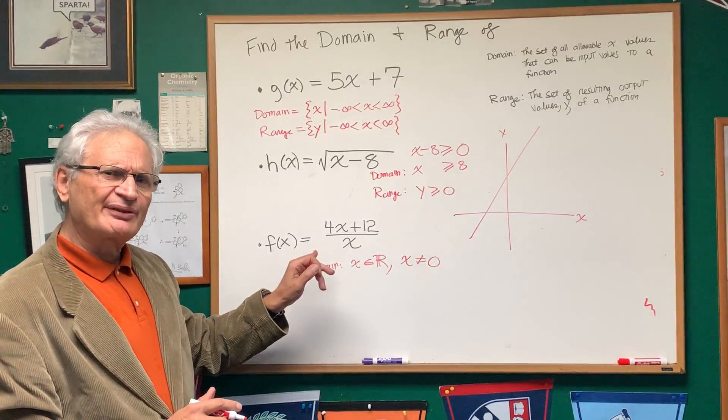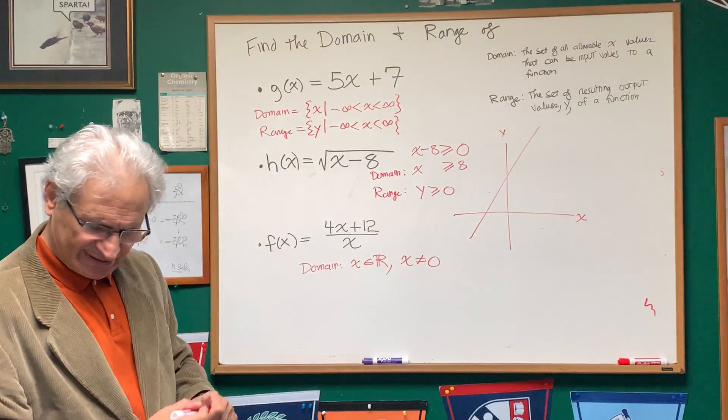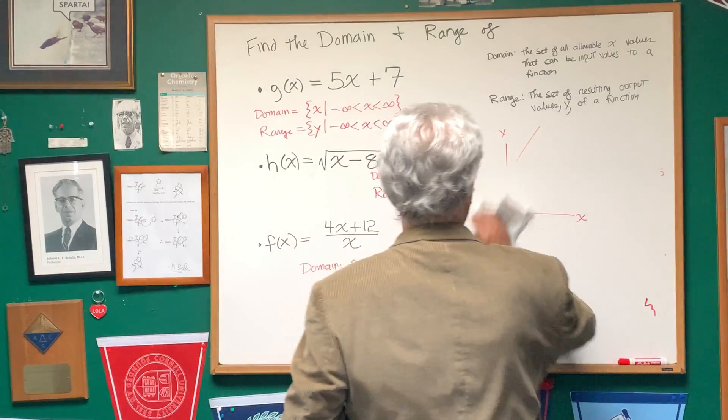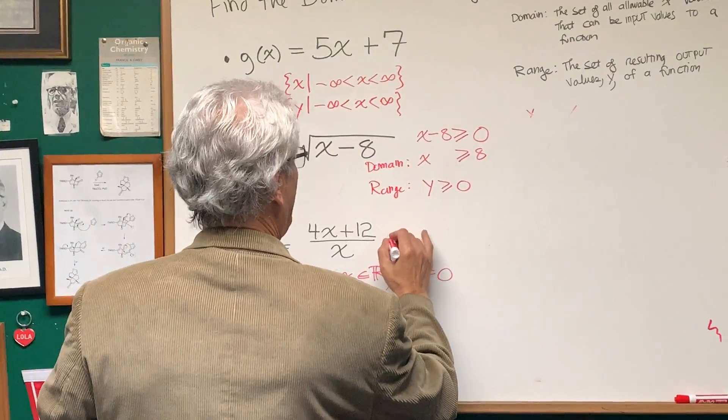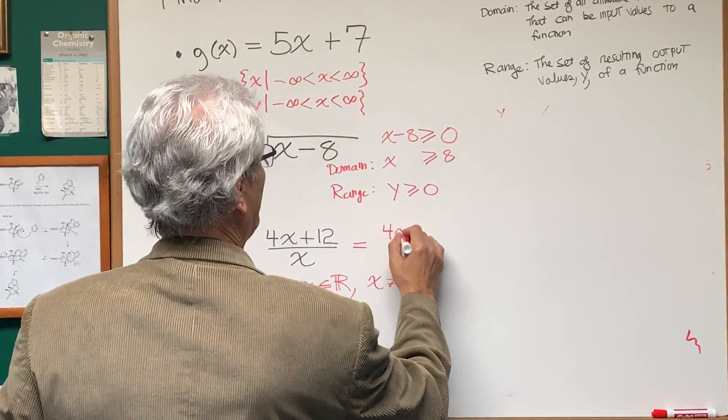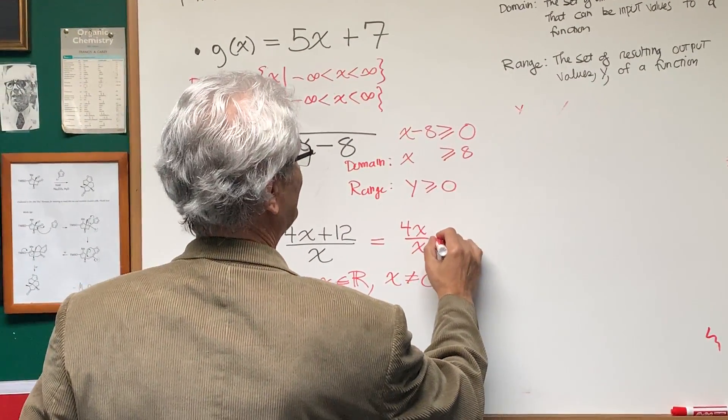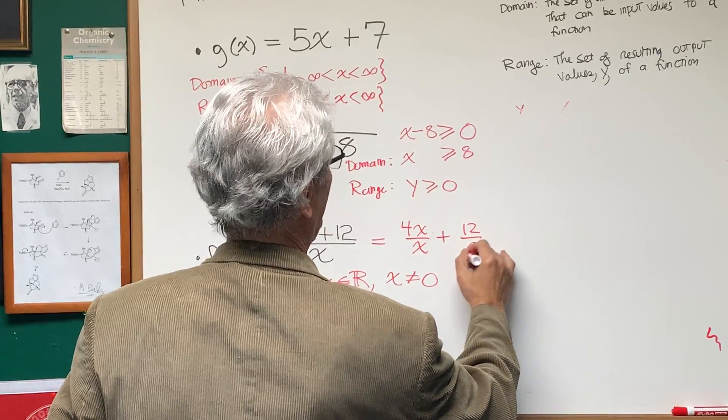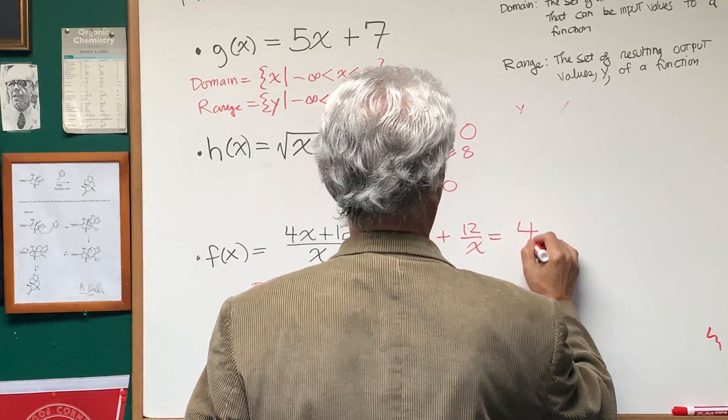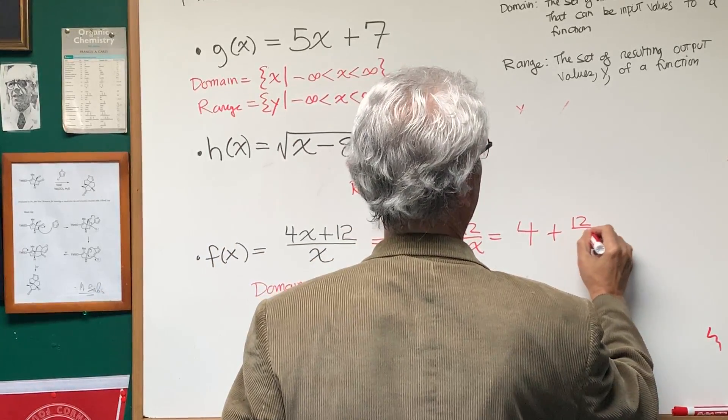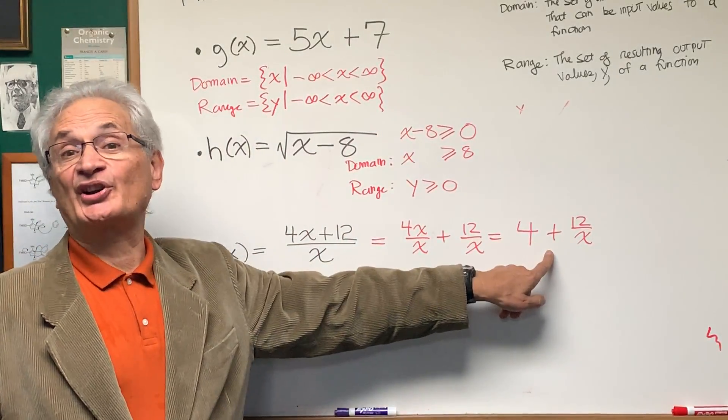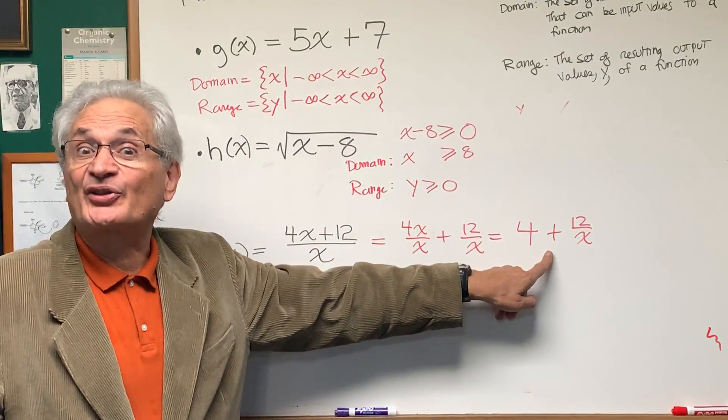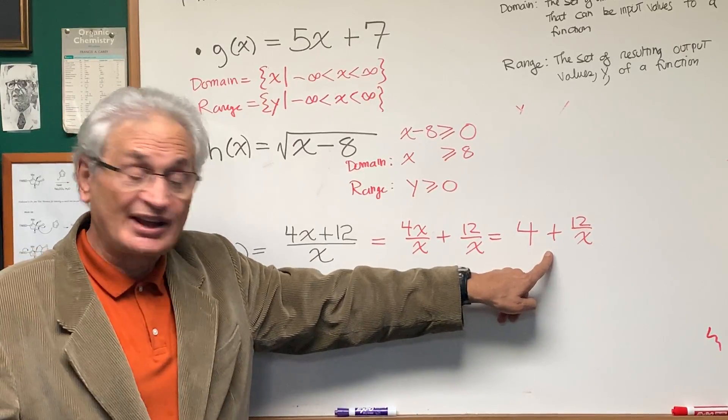Now what about the range of this? This is going to be a little bit more complicated. And I'm going to expand this so we can see it a little bit better. We're going to write this as 4x divided by x plus 12 over x. This becomes 4 plus 12 over x. And now from this expression we're going to examine what the range, what the possible output values are going to be.